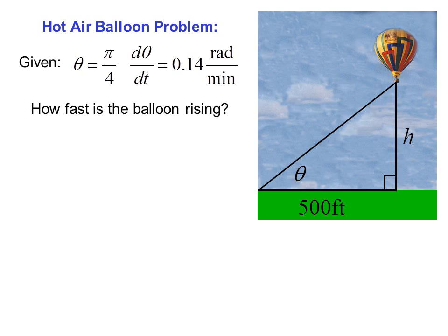We want to find dh/dt, so we need a formula that relates the angle theta and the known value, 500 feet, and the value we're looking for, which is h. The tangent definition will do that, because tangent theta equals opposite over adjacent. So in this case, tangent theta equals h over 500.